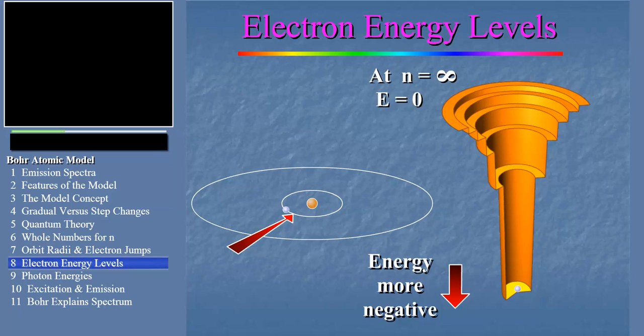Notice that the energy is zero at the top of the well, which corresponds to an orbit number of infinity. Notice that the well is an unusual one, with steps going down every so often. Each step represents the energy of an electron orbit and is labeled orbit one, n equals one, orbit two, n equals two, and so on.